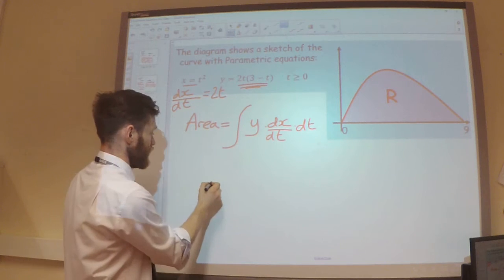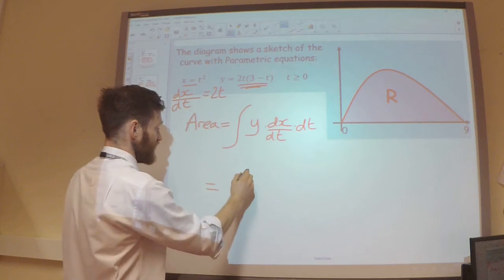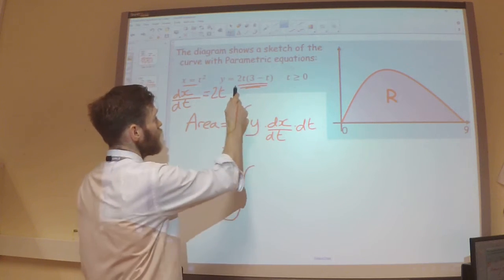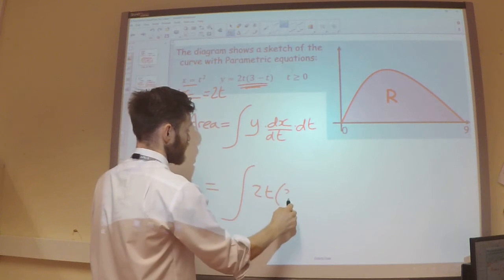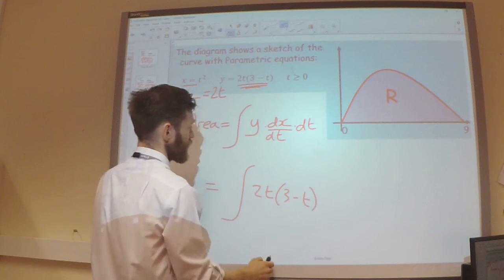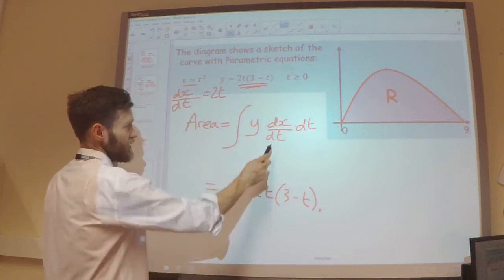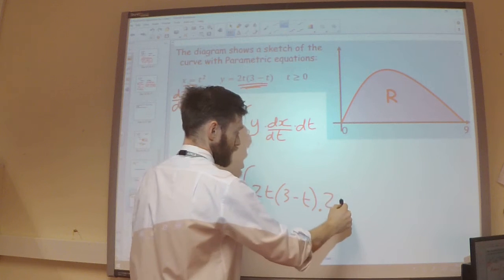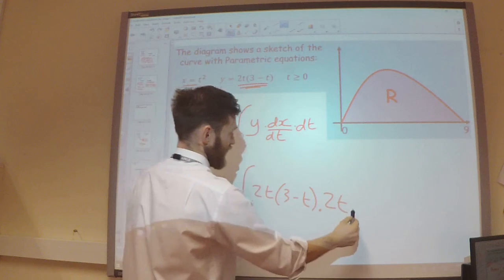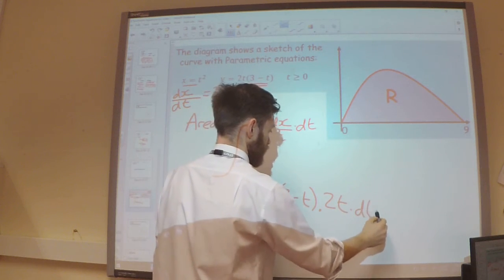So I can now say that my area is the integral of y, which is 2t(3 minus t), multiplied by dx/dt, which is 2t, with respect to t.